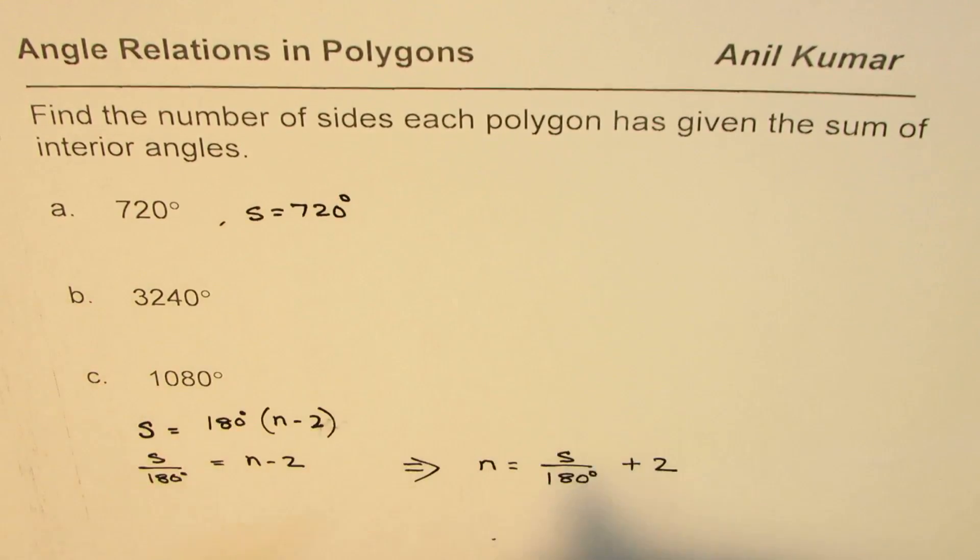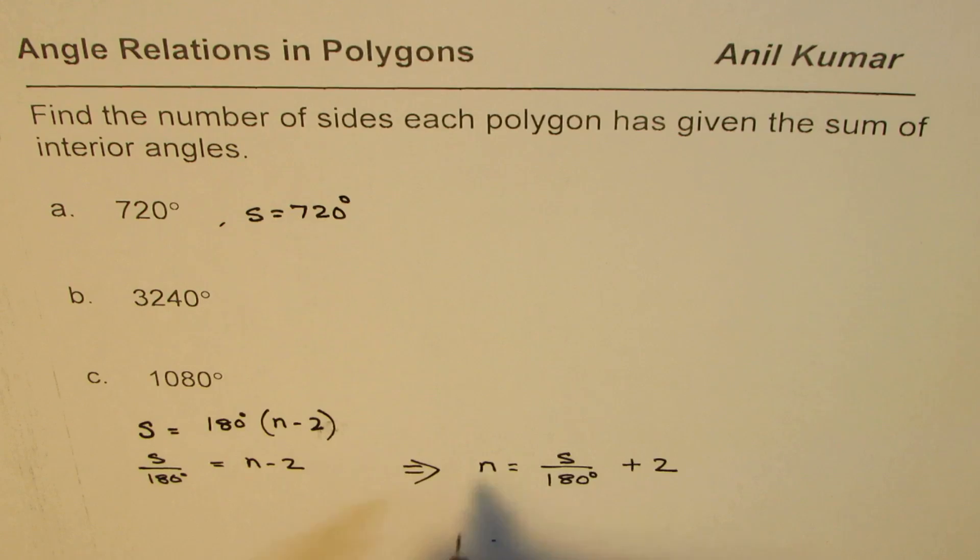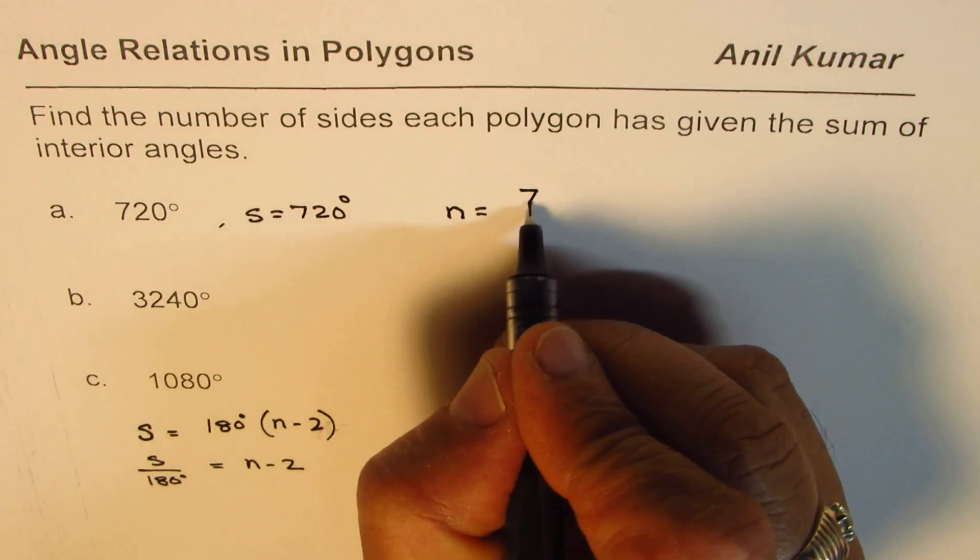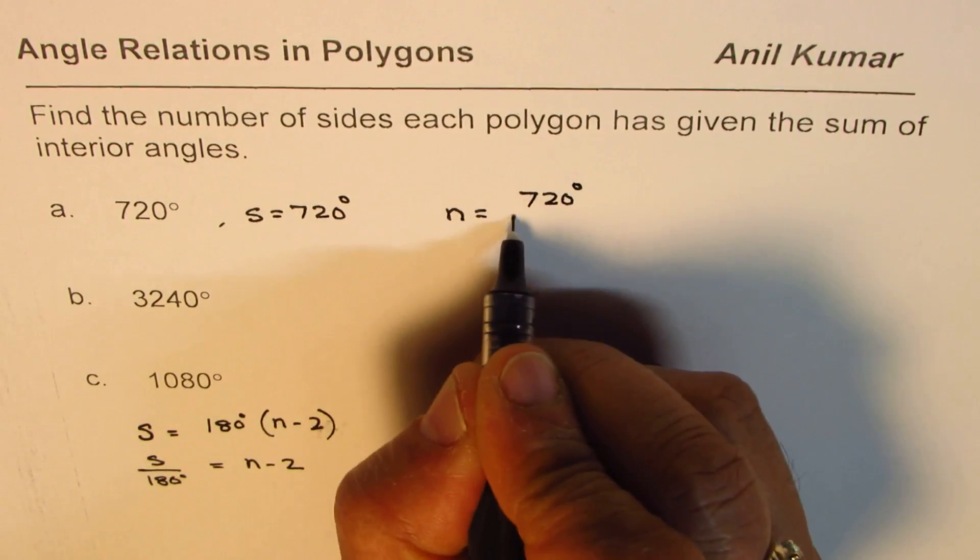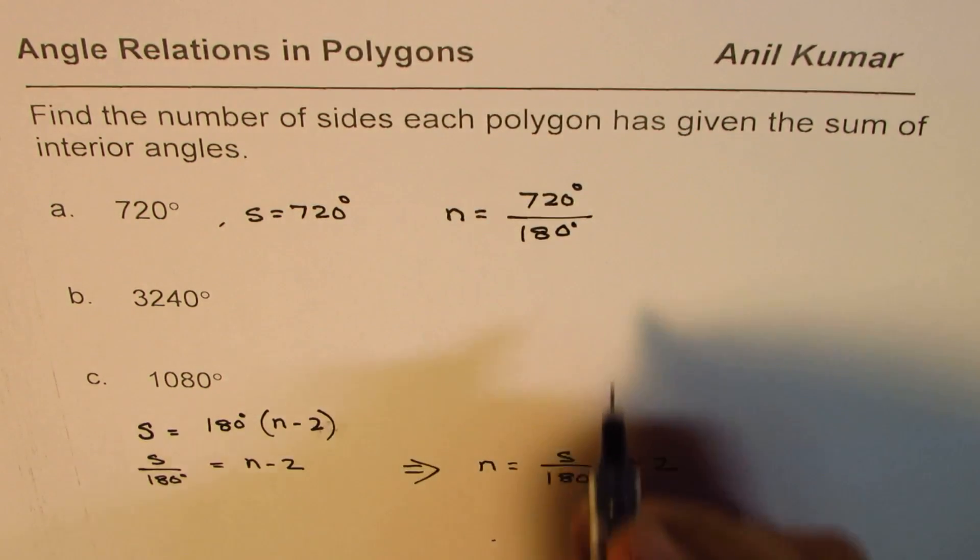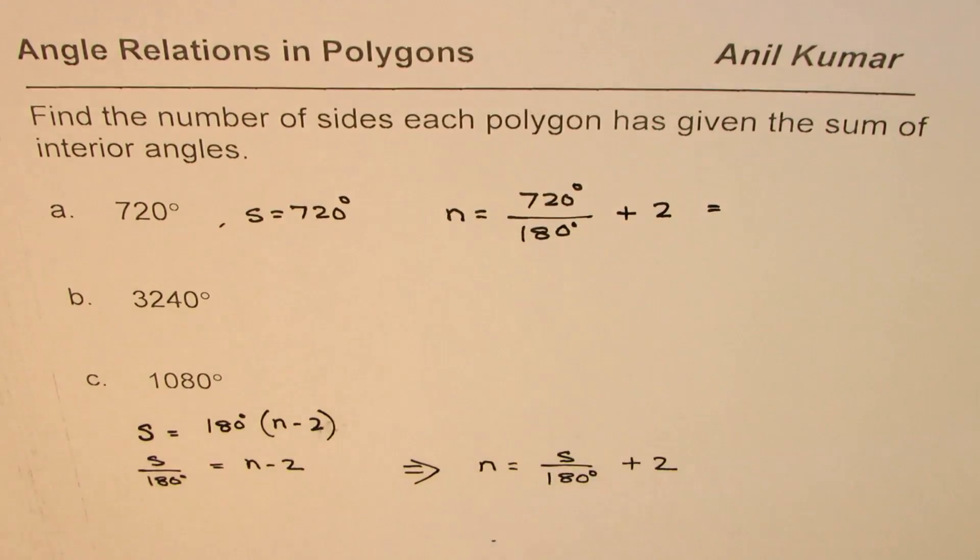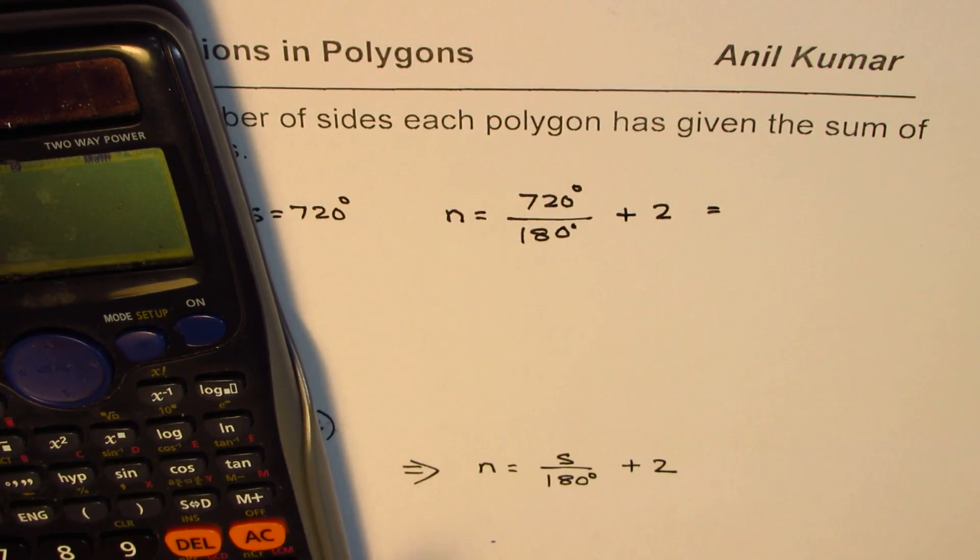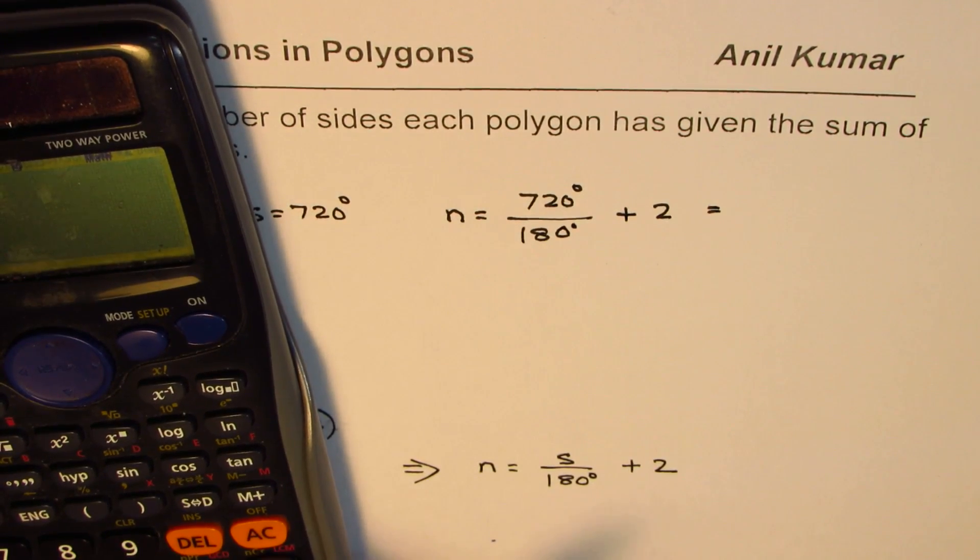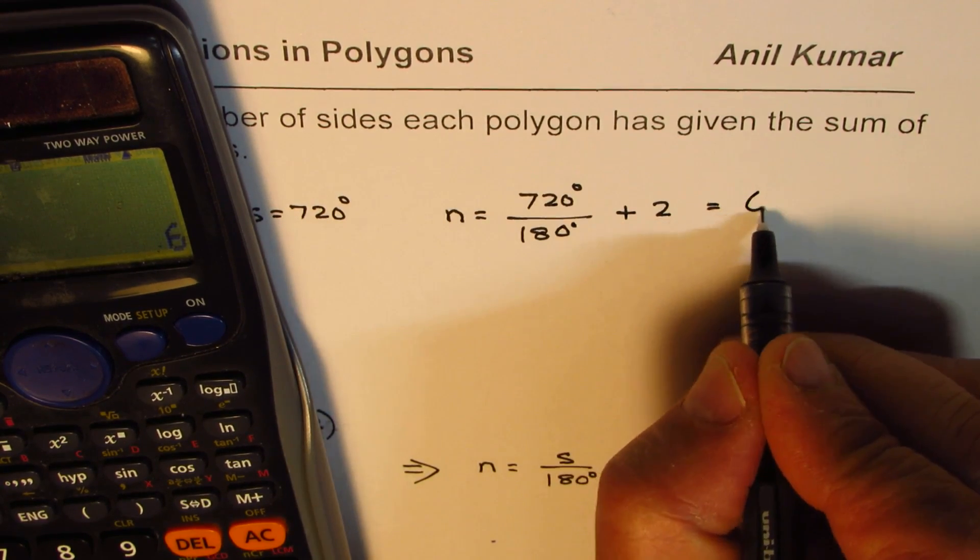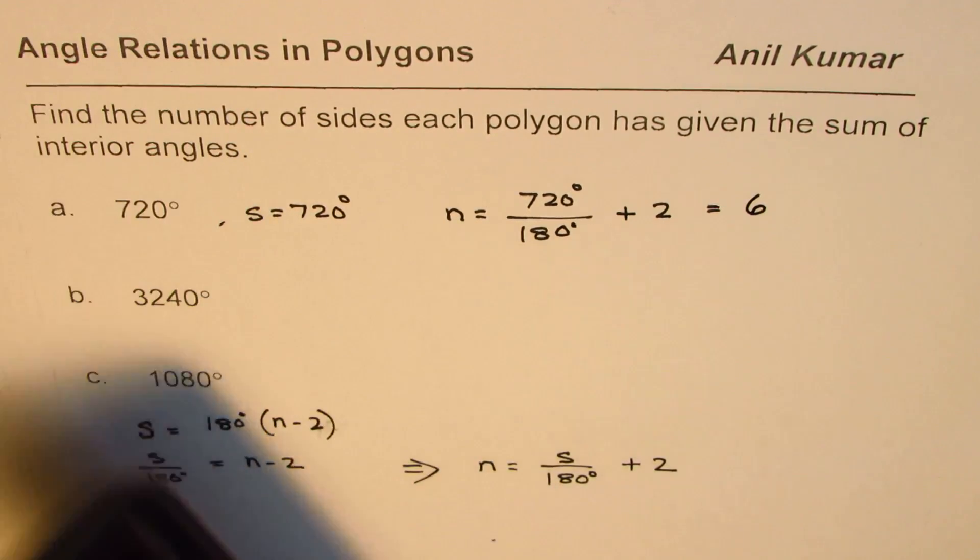we need to find n, the number of sides. n equals sum divided by 180, that is 720°/180° + 2. You can use the calculator: 720 divided by 180 equals 4, plus 2 equals 6. You get your answer, 6.